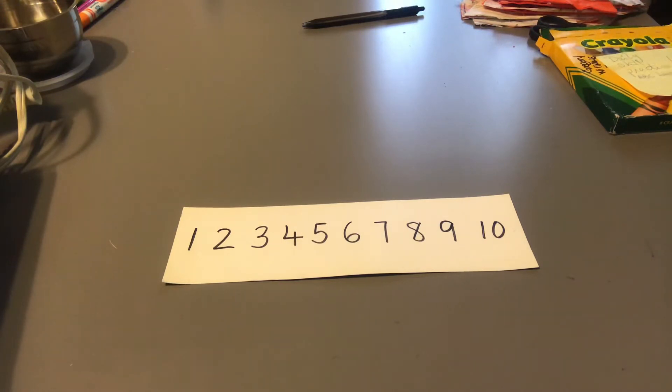Rote counting is when they count 1, 2, 3, 4, 5, 6, 7, 8, 9, 10, 11, 12 without the numbers, but this is to help them learn how to recognize the number as they count.